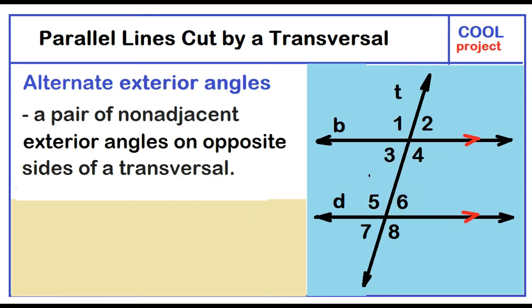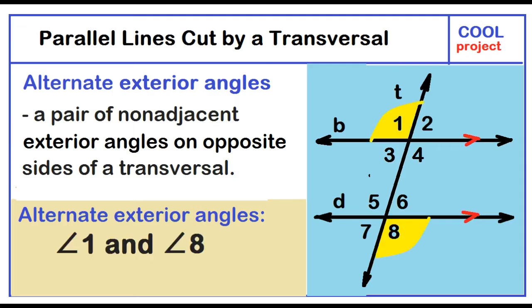Alternate exterior angles — a pair of non-adjacent exterior angles on opposite sides of a transversal. The alternate exterior angles are angle 1 and angle 8, and angle 2 and angle 7.